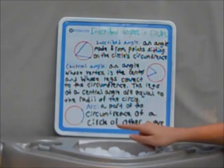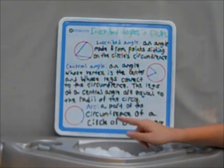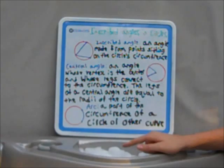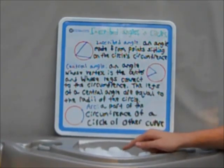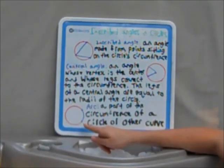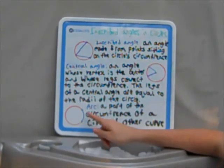The last definition is arc, which is a part of the circumference of a circle or other curve. The arc is shown here highlighted in blue, connecting from one point on the circumference to the other curve.